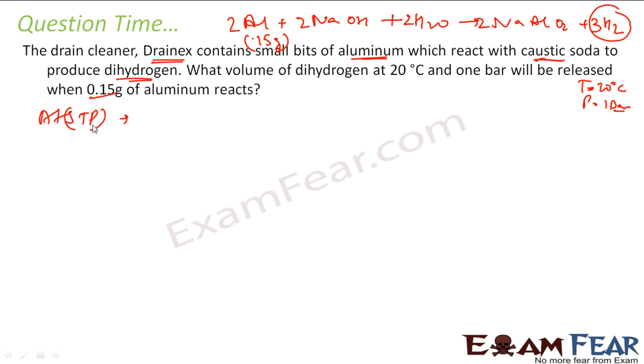So 54 grams of aluminum will give how much? 3 into, 3 moles of hydrogen you can say, and 1 mole is 22400 ml. So this is many ml of hydrogen gas because we are asking in terms of liters, how many volume of hydrogen gas. At standard temperature and pressure, 54 grams of aluminum gives this much volume of hydrogen gas.